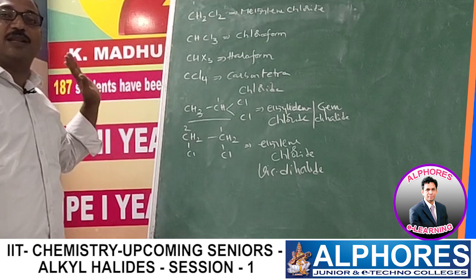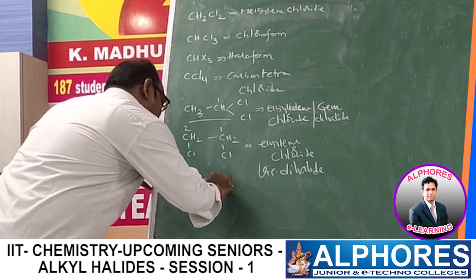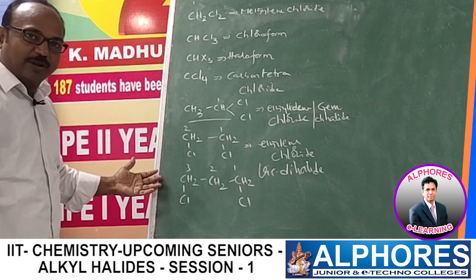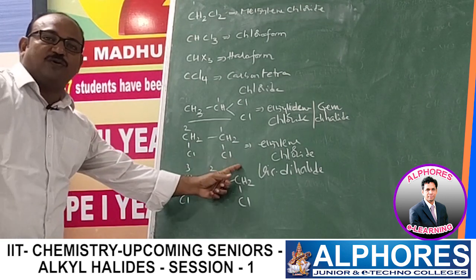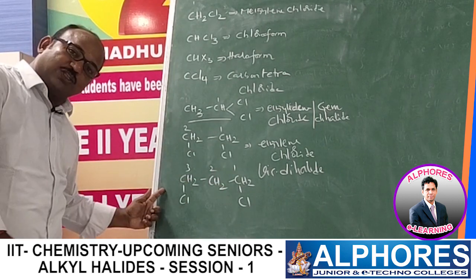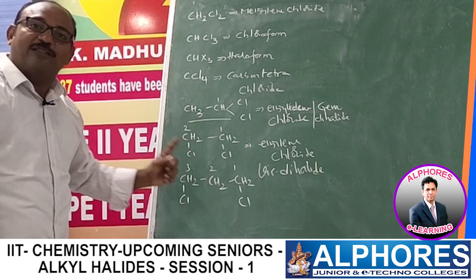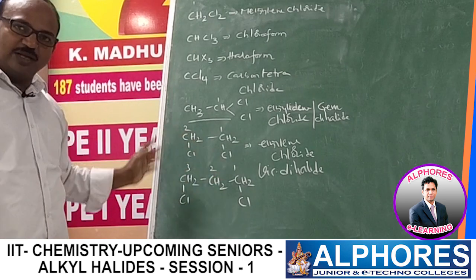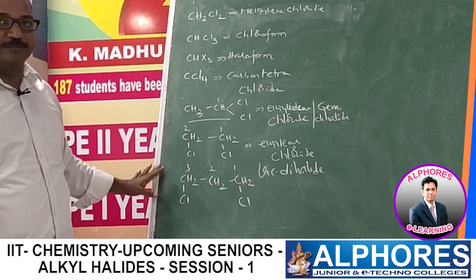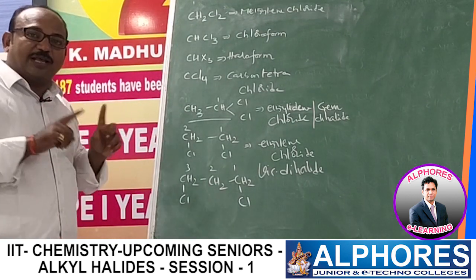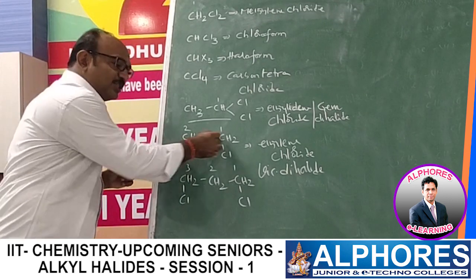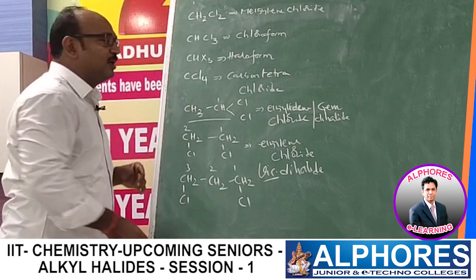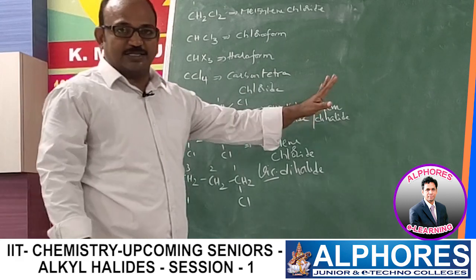Important clarification on vicinal vs. geminal: in vicinal dihalides, the two halogen atoms must be on adjacent carbon atoms specifically. For example, 1,3-dichloropropane has halogens on different carbons, but not adjacent — so it is NOT a vicinal dihalide. Geminal means both halogens on the same carbon; vicinal means both halogens on adjacent carbons.